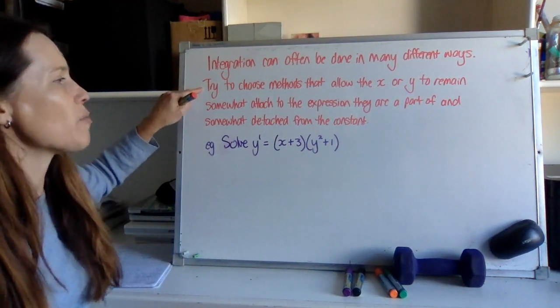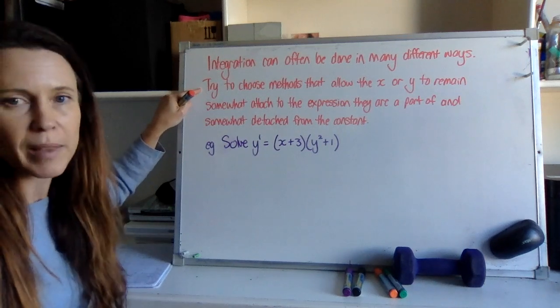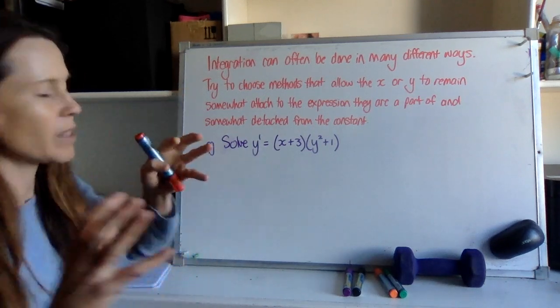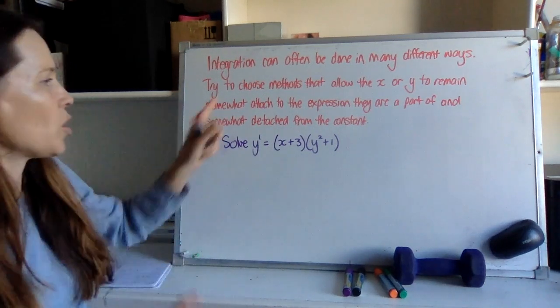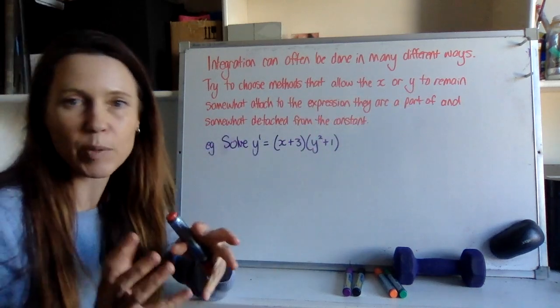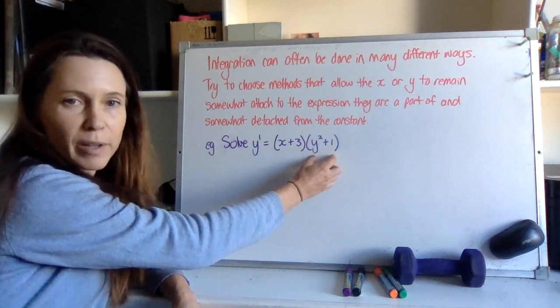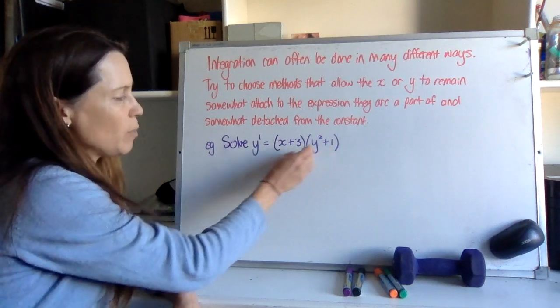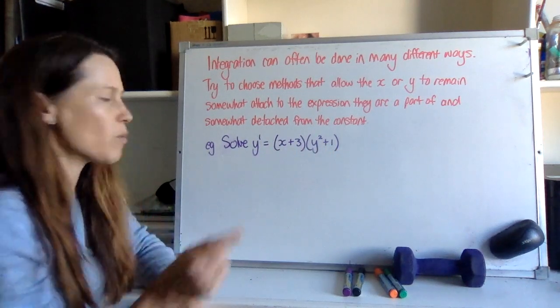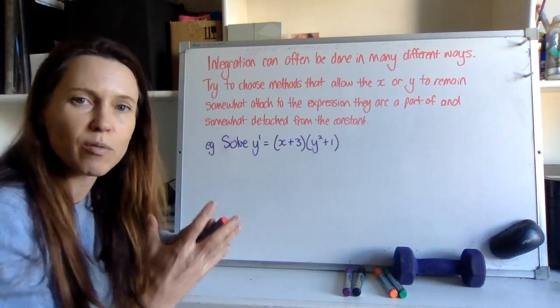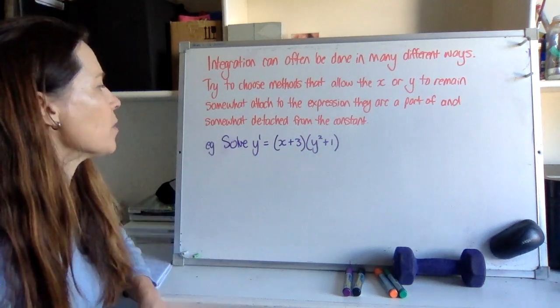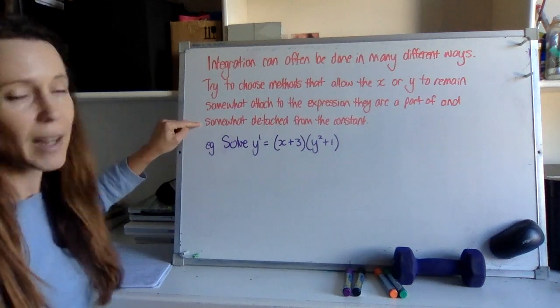But if we've got a choice of methods, we want to generally choose methods that allow the X or Y to stay attached to the expression they're part of. By the expression they're part of, I mean if we've got a differential equation that is a function of X multiplied by a function of Y, try and keep these parts together because that will minimize the number of Xs and Ys that you've actually got in your solution. We want to keep them somewhat detached from the constant.